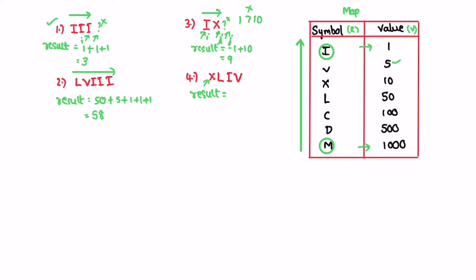Continuing with the 1994 example: i is pointing to X (value 10) and j is pointing to L (value 50). Since 10 is not greater than 50, we subtract, giving minus 10. Then 50 is greater than 1, so we add 50. Next, i points to I (value 1) and j points to V (value 5); 1 is not greater than 5, so we subtract minus 1. Finally, we directly access the last symbol and add it to result. This gives us the value 44 for that portion, and that's how the full conversion works.